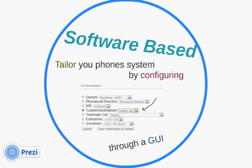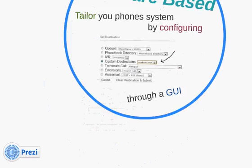Because voice over IP is software based, you can tailor your phone system by configuring it through a graphical user interface — quite easy. You can set a destination for interactive voice response: press 1 for sales, press 2 for a phone book directory. You can send calls to a queue for a call center, route to a submenu or custom destination, terminate the call, or send it to a specific extension or voicemail. You have these software-based GUIs and it's quite easy.